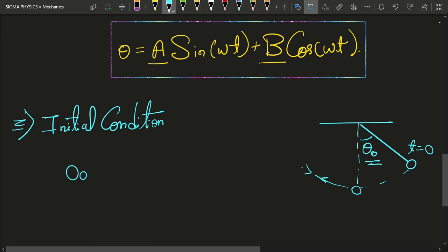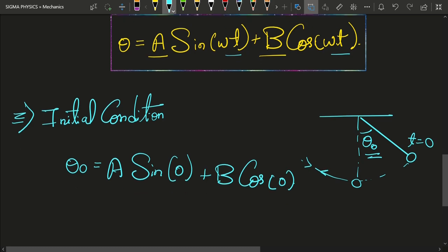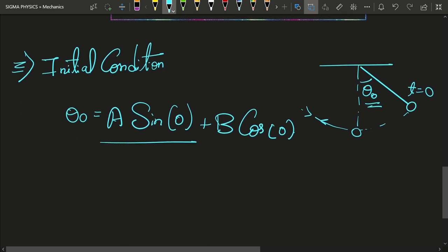Instead of θ I have θ₀, which could be equal to A sin(0) + B cos(0). Instead of t in this equation, I have put zero because we are looking at the situation of this system at t = 0. Sin(0) is 0, and cos(0) is 1, so θ₀ = B. Hence B = θ₀.